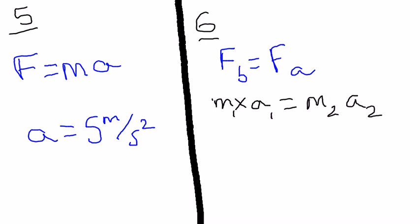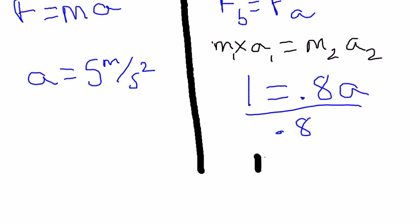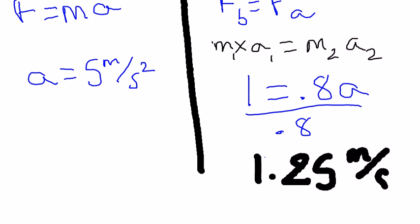For this one, it's going to be 1 for the force. For the other one, the mass is 0.8. What must the acceleration be for them to be equal? So you do algebra here to isolate the a, and you get 1.25 meters per second squared is equal to the acceleration.